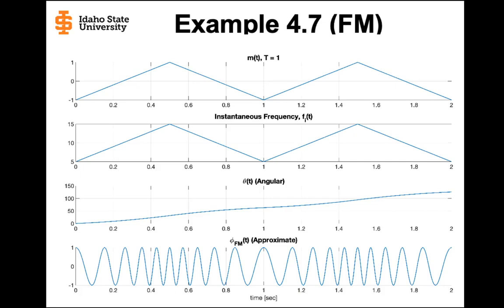Looking at all the graphs together: the top graph is the triangle wave message, the instantaneous frequency goes from a minimum of 5 to a maximum of 15 hertz, and the angle changes with time. At the very bottom is the frequency modulated signal. Starting at time 0, the FM signal has the lowest frequency — it's spread out the furthest — and we can confirm that the instantaneous frequency is at a minimum of 5 there. Moving further in time, the FM signal becomes more and more bunched up, meaning the frequency is increasing.